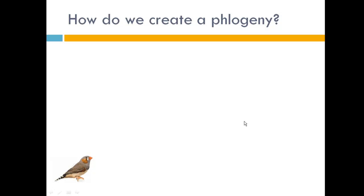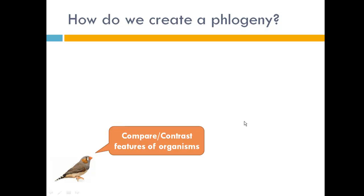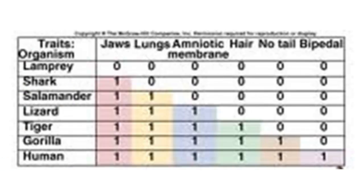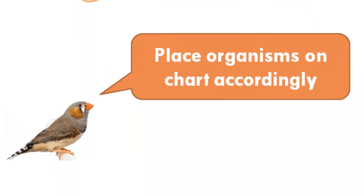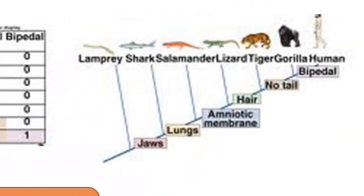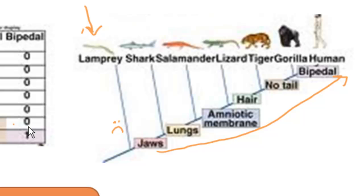How do we actually create these trees? The first step is to compare and contrast features such as a backbone or legs. Here's a chart with different species on the left and different traits across the top. For example, the only thing that doesn't have jaws is the lamprey — everything else does. Almost everything has lungs except the shark and the lamprey. The second step is to place the organisms on a chart, with the lamprey all by itself because it doesn't have jaws. We keep adding organisms until we get to the last one — in this example, a human — which is the only thing with bipedalism, or the ability to walk on two legs.